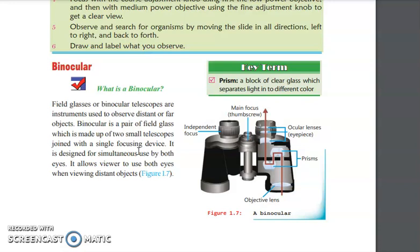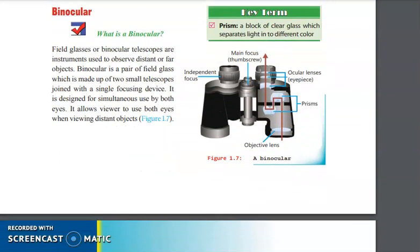It is designed for us to observe with our two eyes. It contains ocular or eyepiece lens, independent focus, objective lens, and a prism. A prism is a block of clear glass that separates light into different colors.